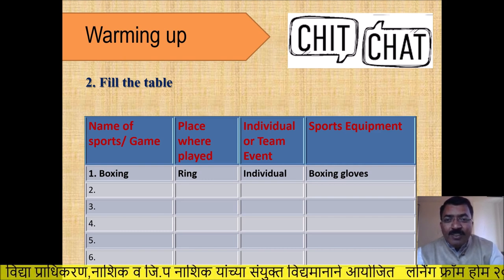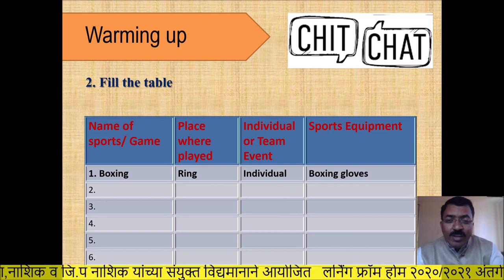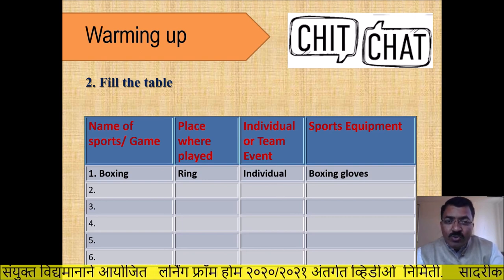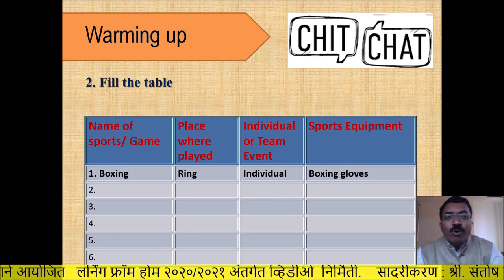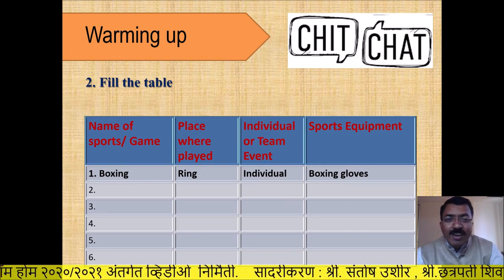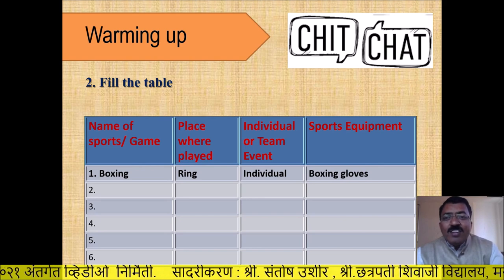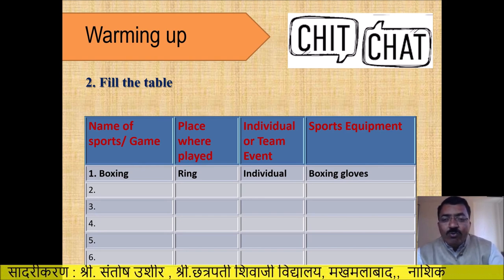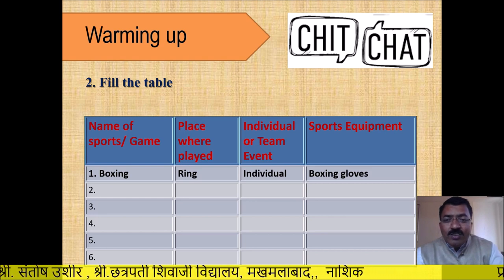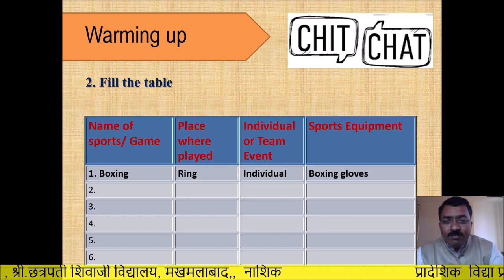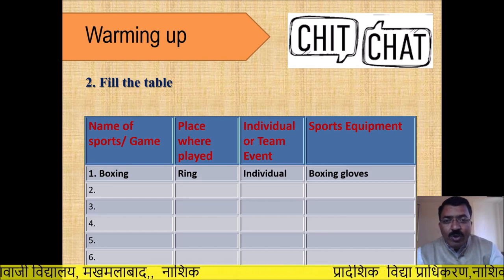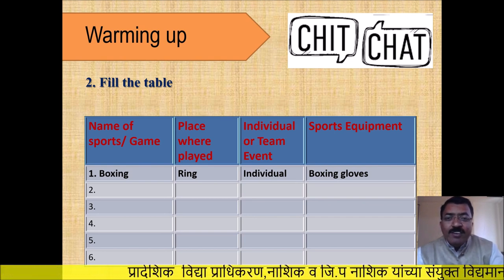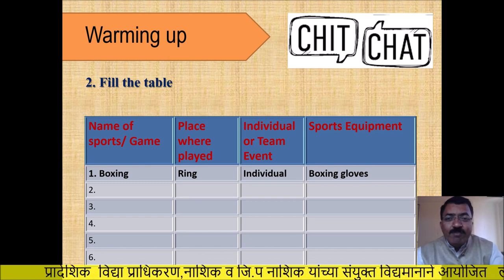For the first row, the sport is boxing, played in a boxing ring, it is an individual event, and the sports equipment is boxing gloves. For the second through sixth rows, you have to write any game and the related information of that game in the given blanks.